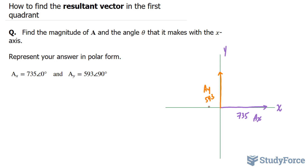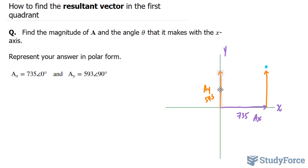What they're looking for here is the resultant. Using the tail-to-tip method and bringing this arrow over, we know that our resultant will extend to a point where the tip reaches up. Our vector will look like this, ending right there. So we're expected to find the magnitude of this blue line and the angle it makes with the x-axis.